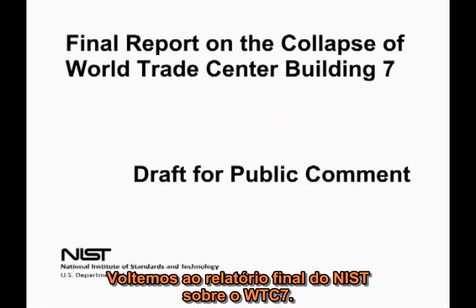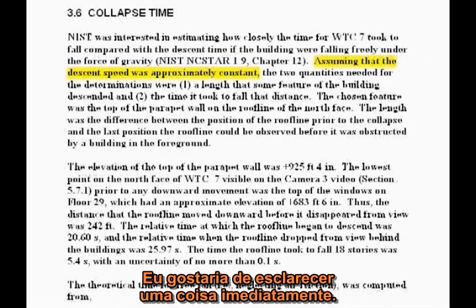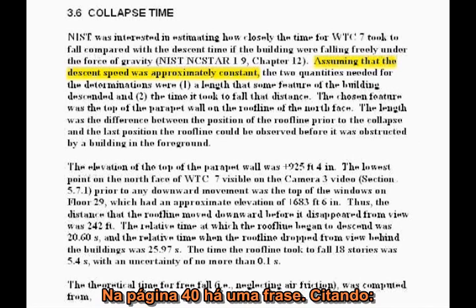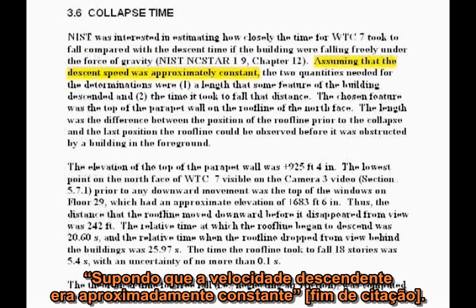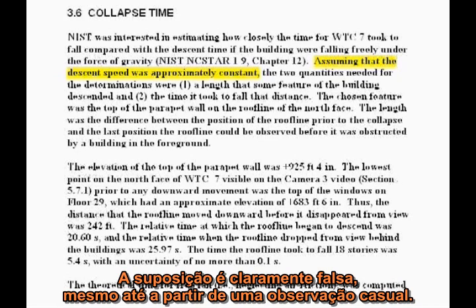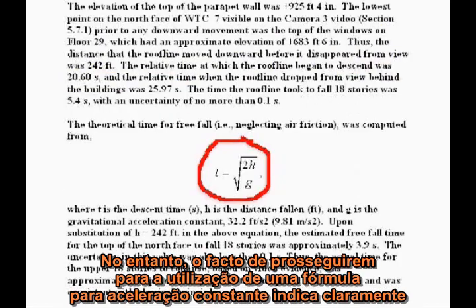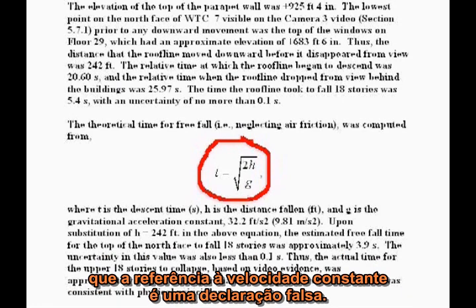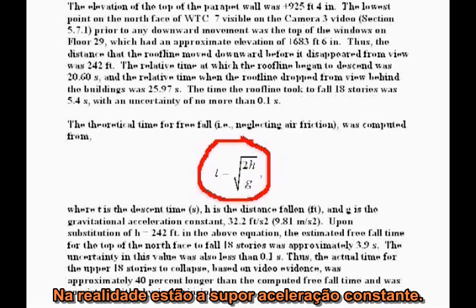Let's return to the NIST final report on WTC 7. I would like to clarify one thing right away. On page 40, there is a phrase — quote, "assuming that the descent speed was approximately constant" — unquote. The assumption is clearly false from even casual observation. However, the fact that they proceed to use a formula for constant acceleration clearly indicates the constant speed reference is a misstatement. They're actually assuming constant acceleration.